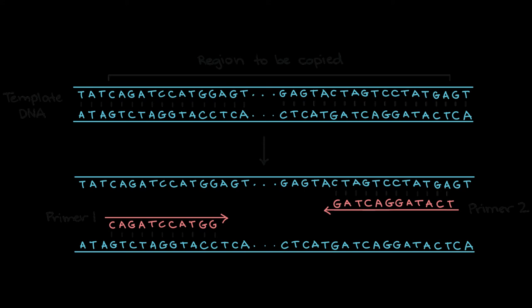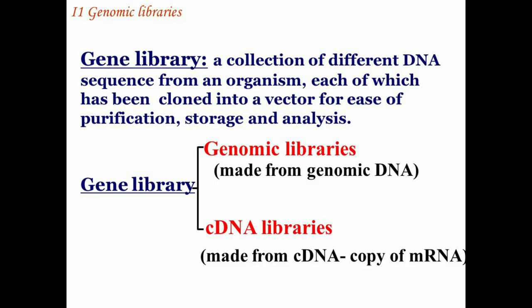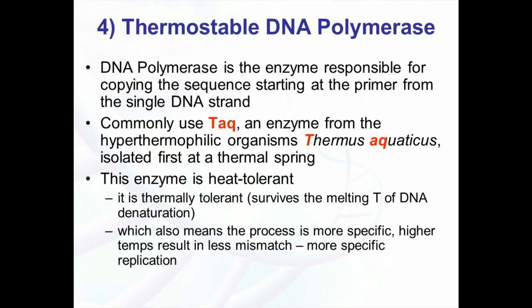DNA polymerase used in PCR is temperature-insensitive and thermostable, extracted from the bacterium Thermus aquaticus, which lives in hot springs. Commonly, this enzyme is known as Taq polymerase. It can withstand the high temperatures used to separate double-stranded DNA, so the replication process does not need to be interrupted to add more enzymes. PCR is done these days in an automatic PCR machine, or thermocycler, which is a routine piece of equipment in any laboratory.